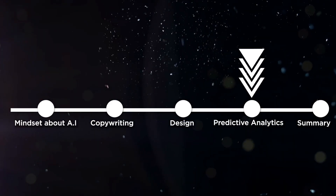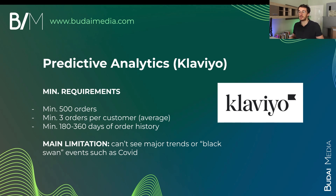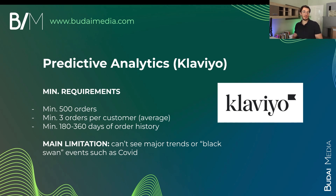After the creatives, now I'll focus on analytical tools and segmentation — specifically predictive analytics in Klaviyo. This can be found in many different email tools nowadays, but I'm most advanced with Klaviyo. Before we jump into the different tools, there are a few requirements for using predictive analytics in your email marketing. You need a minimum of 500 orders historically, a minimum of three orders per customer on average, and at least six — ideally 12 — months of order history so machine learning can really kick in and see the data.